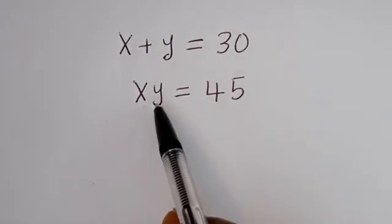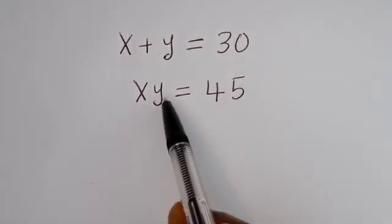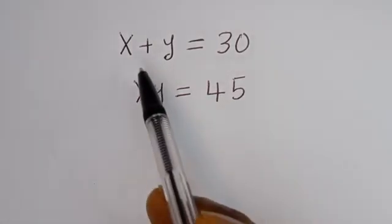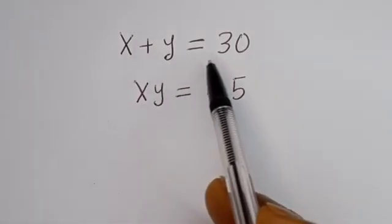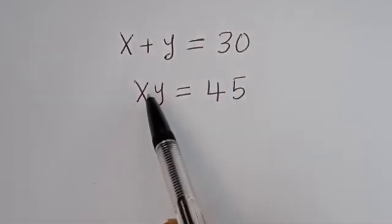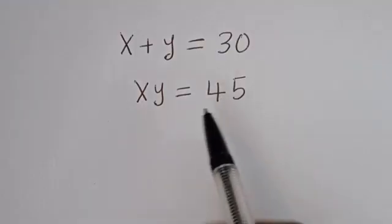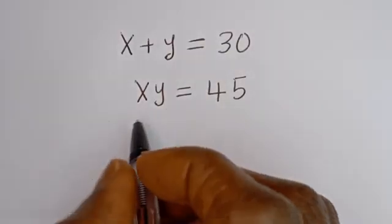Hello. How to solve for x and y in this equation: x plus y is equal to 30, and x times y is equal to 45.